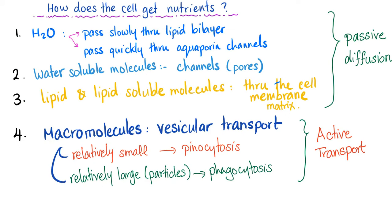How does your cell get nutrients and water? Water can pass slowly through the lipid bilayer, or quickly through aquaporin channels — 'aqua' means water, 'porin' means pore or channel. Water-soluble molecules such as electrolytes like sodium and chloride pass through channels. Lipid and lipid-soluble molecules pass through the cell membrane matrix because the cell membrane is a lipid membrane. Lipid-soluble molecules include carbon dioxide, oxygen, and alcohol.